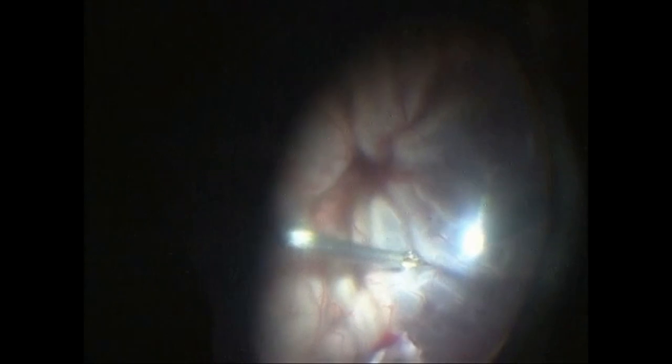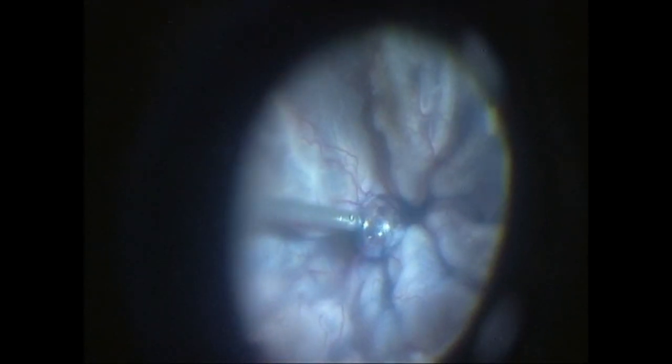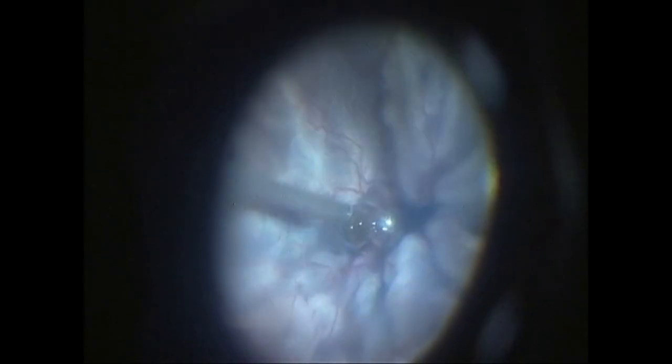Membranes within poles are sought out and removed. A small quantity of perfluorocarbon liquid is injected to open up the posterior space.